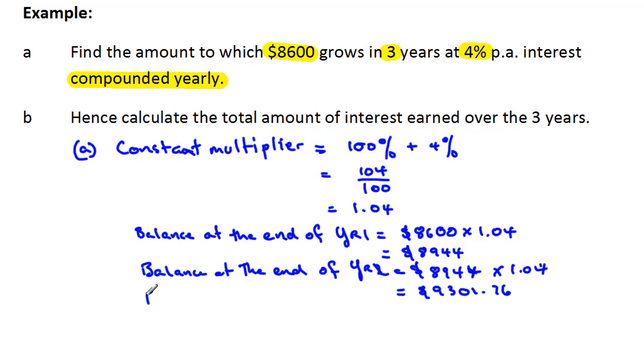And then we can do it one more time and get our balance at the end of year three. And that would be the balance at the start of the year, $9,301.76 times that by our constant multiplier, which is 100% plus 4%, remember, just in decimal form.